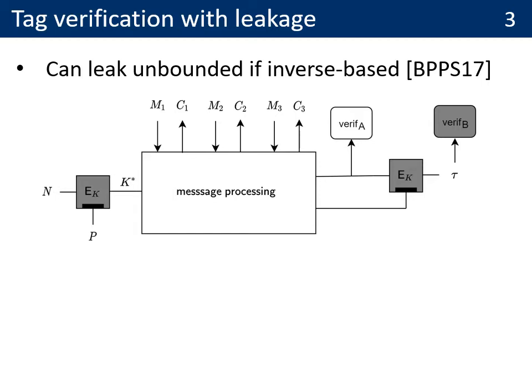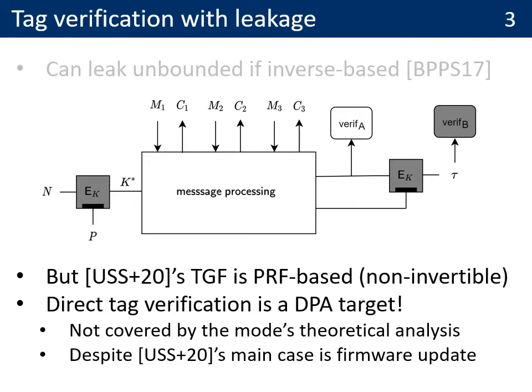Alternatively, it has been shown by Bertie and co-authors that you can also perform an inverse-based tag verification, which is the verification A process of the figure. In this case, you can even leak about verification in an unbounded manner. Now, the problem with the Retrofitting paper is that the tag generation function is based on a PRF, which is non-invertible. As a result, the tag verification is a DPA target, and this DPA target was not covered by the mode's theoretical analysis. This is a problem because the main case study of the Retrofitting paper is firmware update, which requires a secure tag verification.